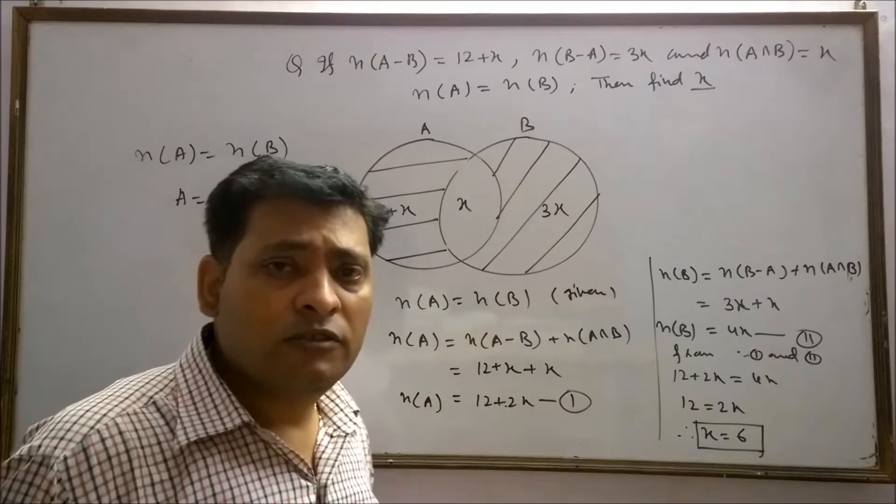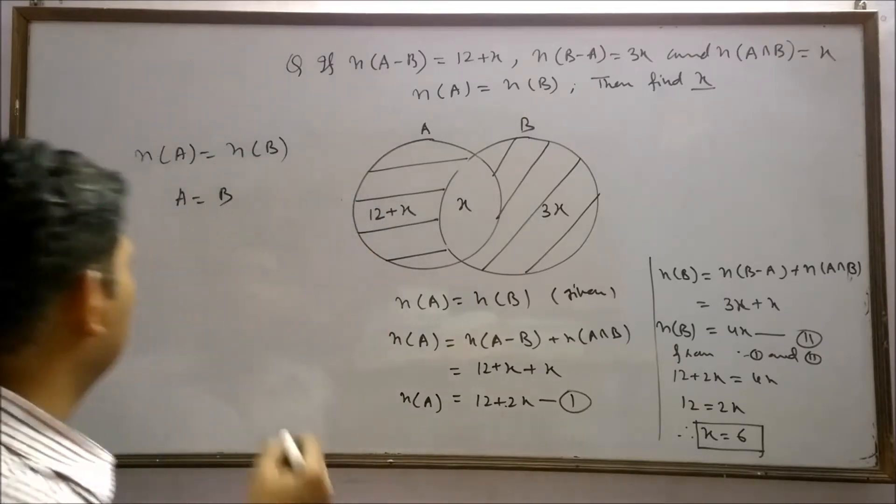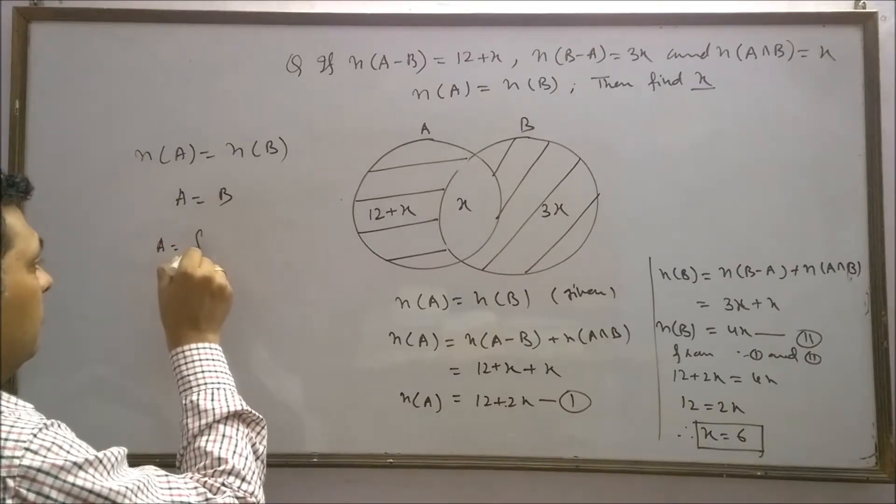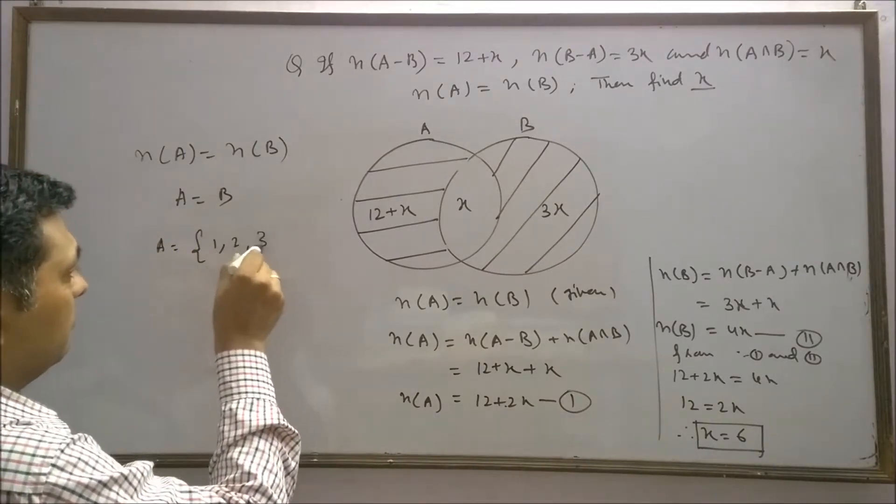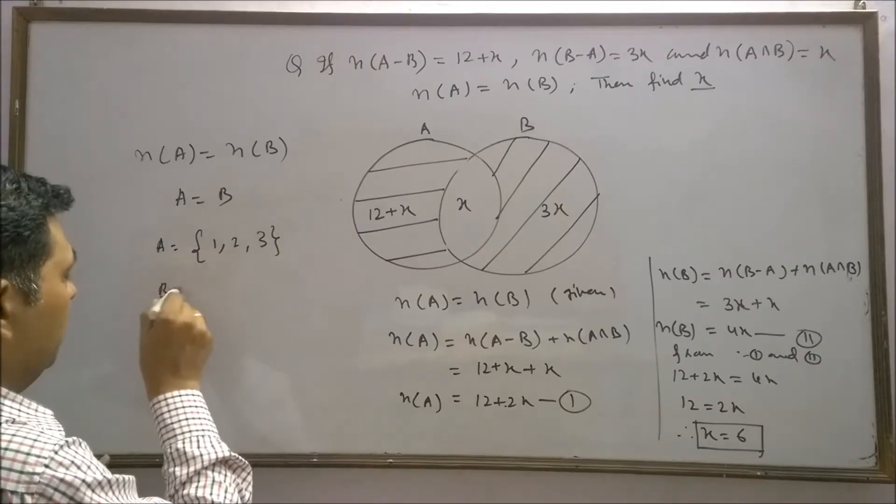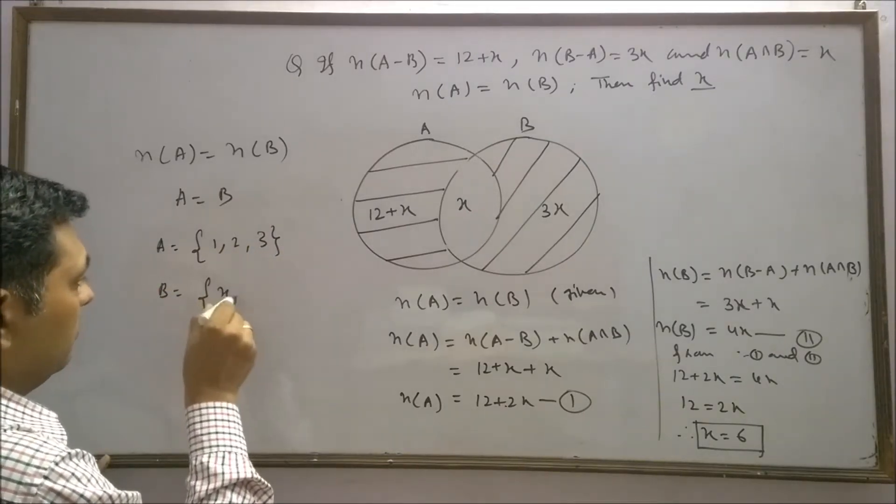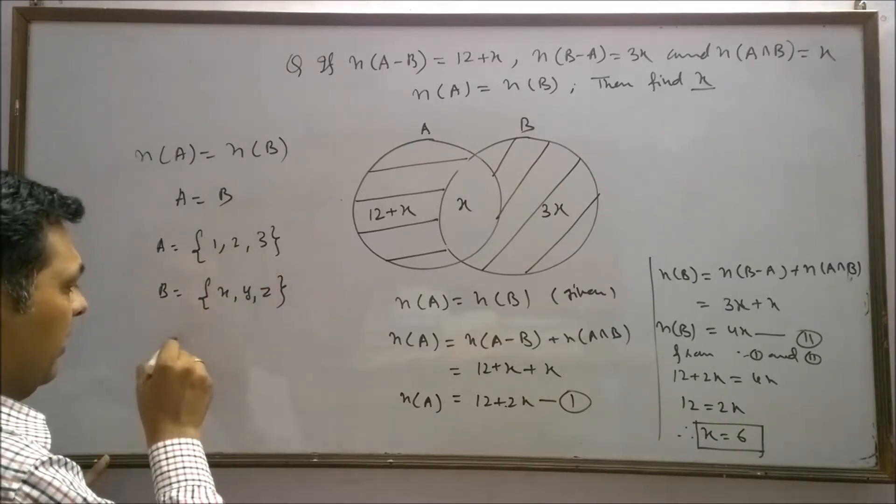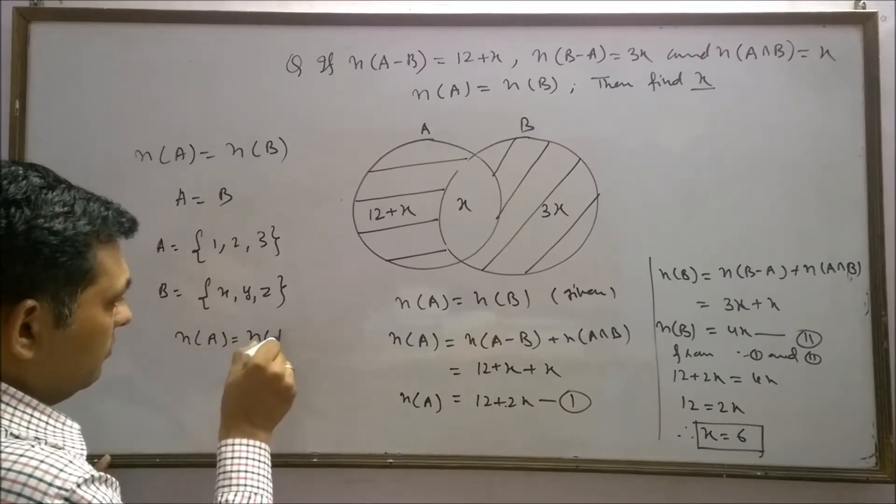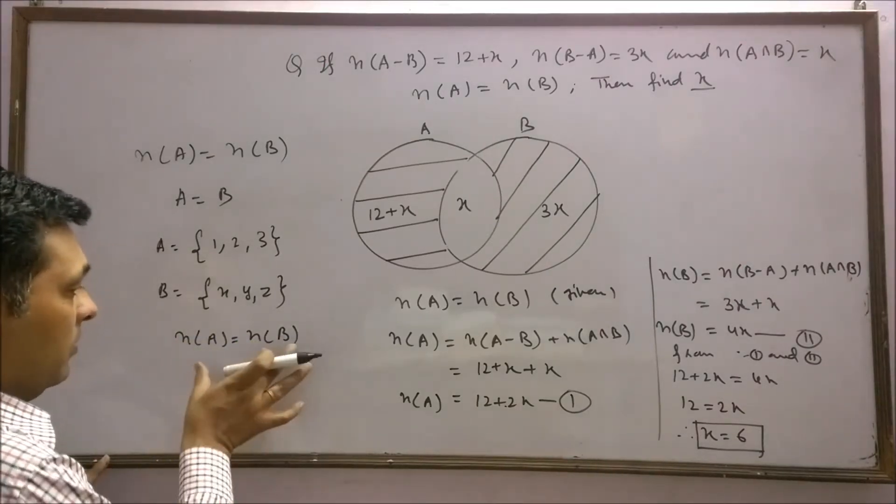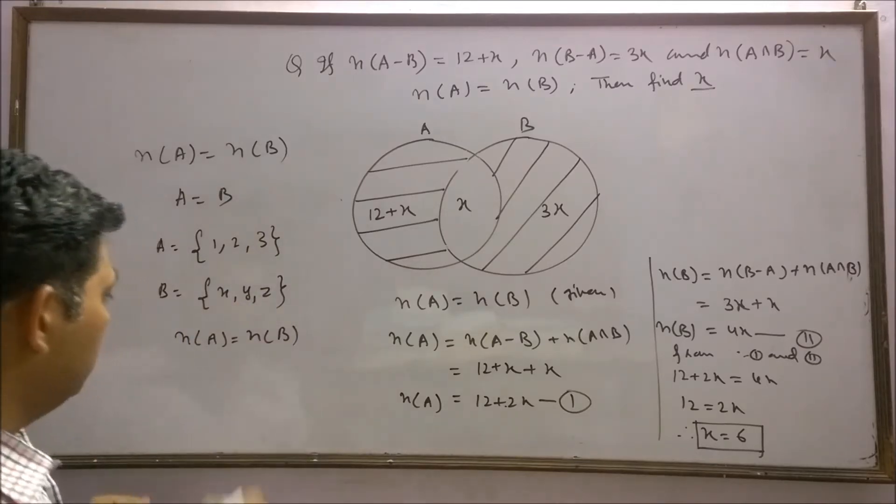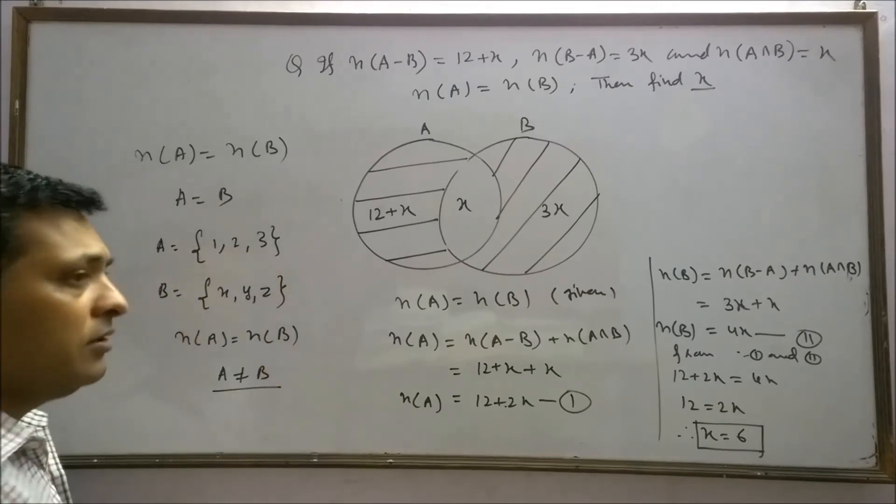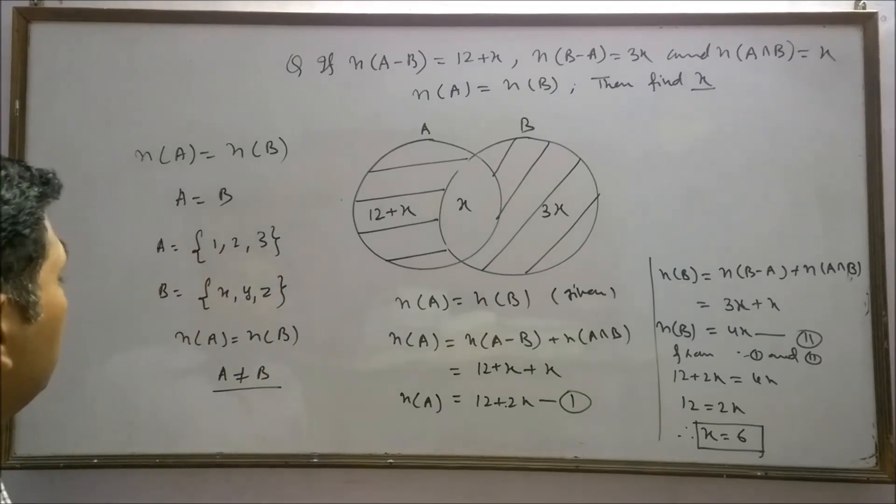Let's try to understand this concept with example. Let set A contain first three natural numbers. Set B contains x, y and z letters. Here we see that n(A) equals n(B). These sets are equivalent sets. But set A is not equal to set B because both sets do not contain same elements.